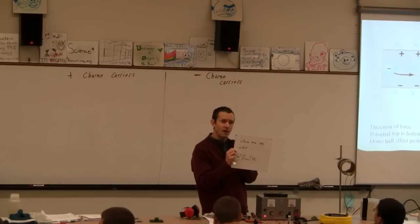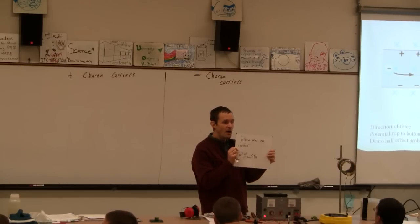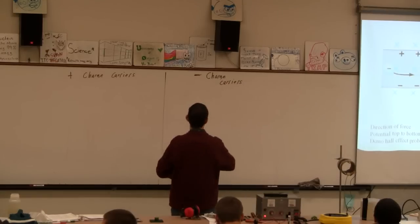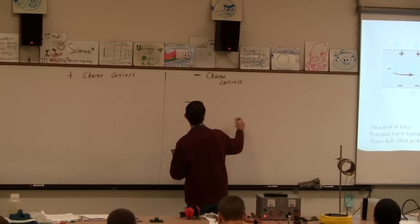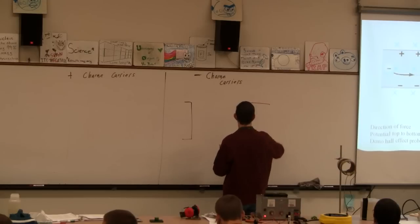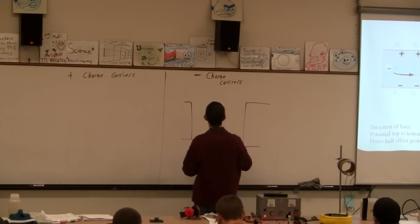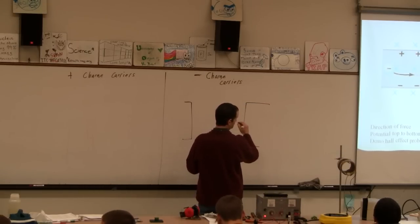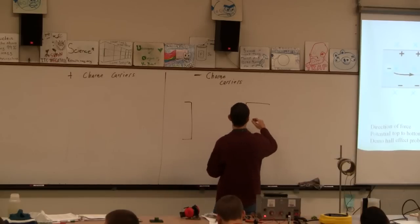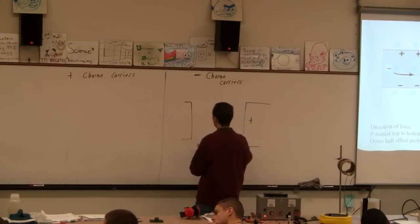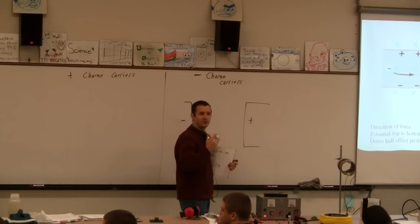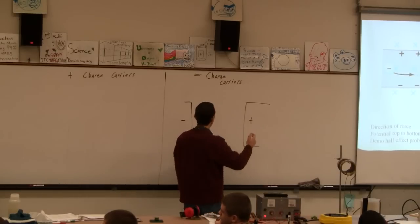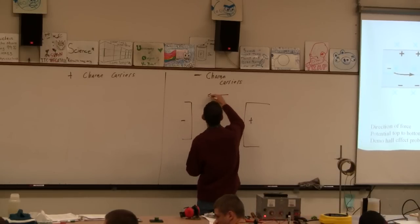In essence, the heart of the Hall effect probe is a flat conductor. On that flat conductor, one side is here and another side is here, and the current — this side is the positive side, this side is the negative side — is supplied by some weak source of current that's sending electricity, and the current flows this way.